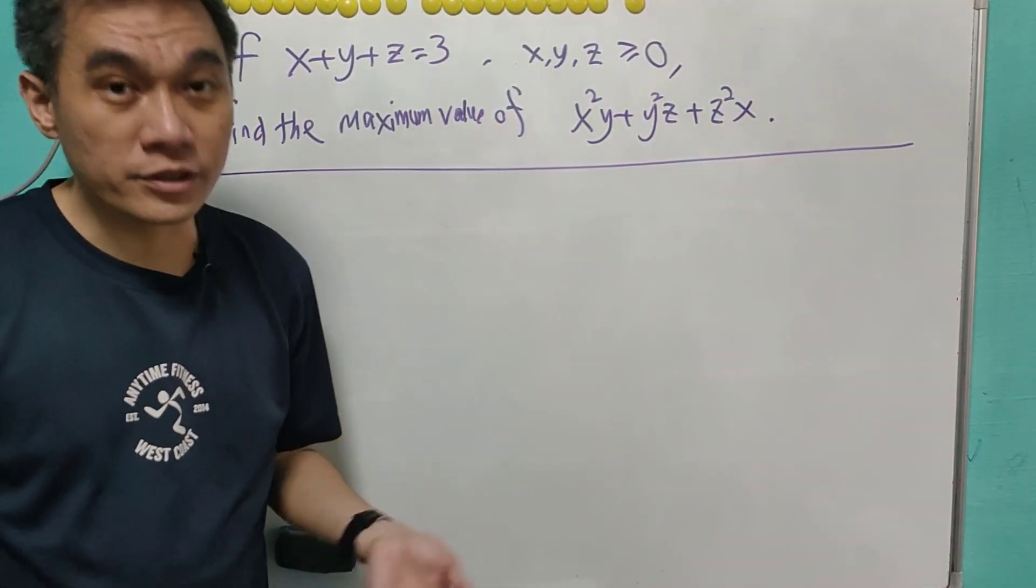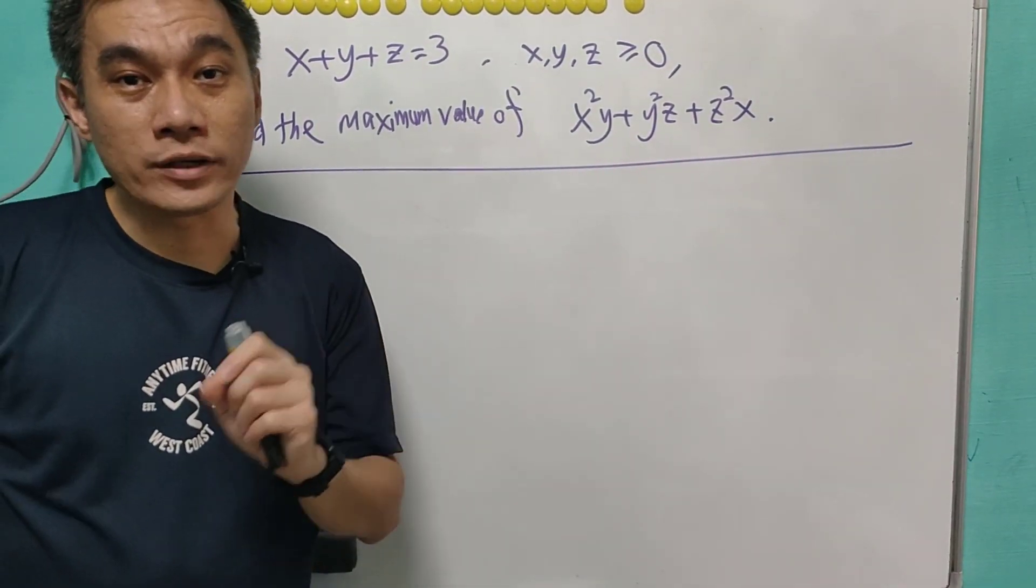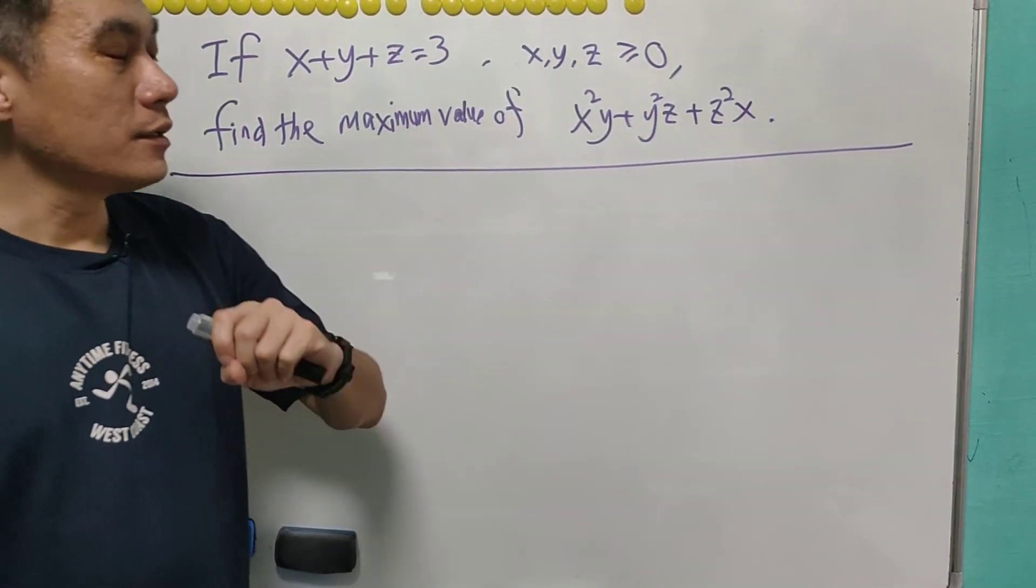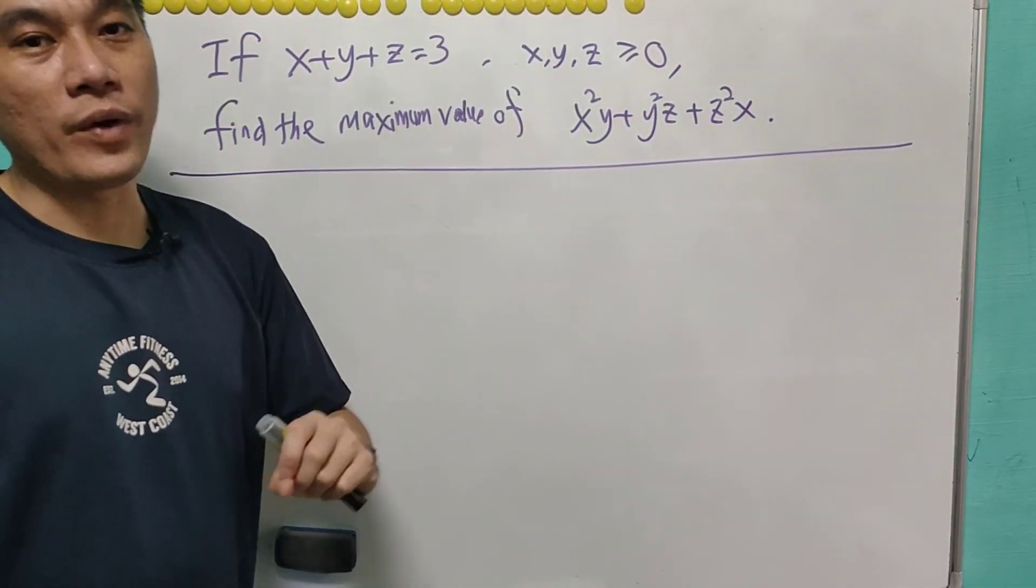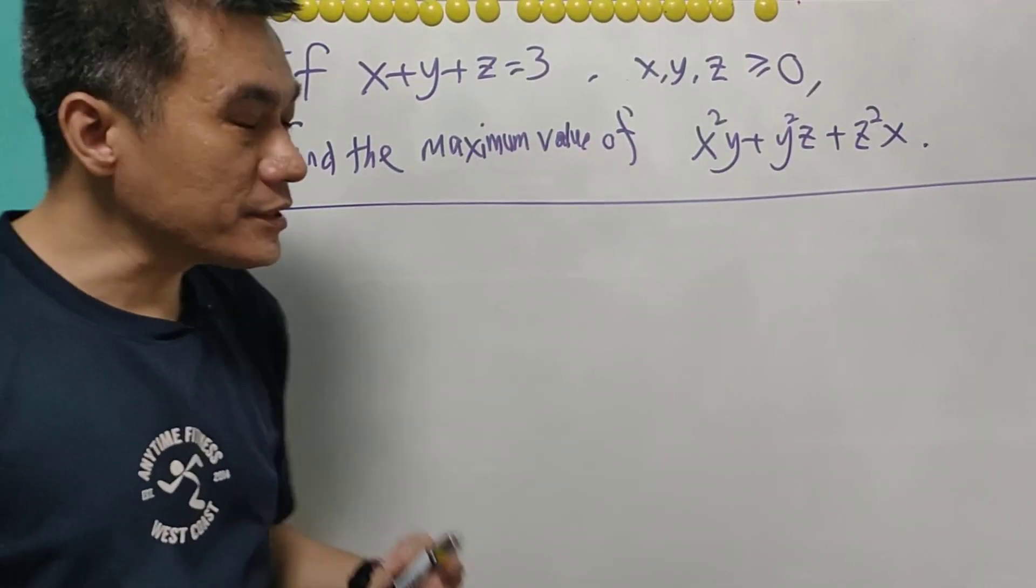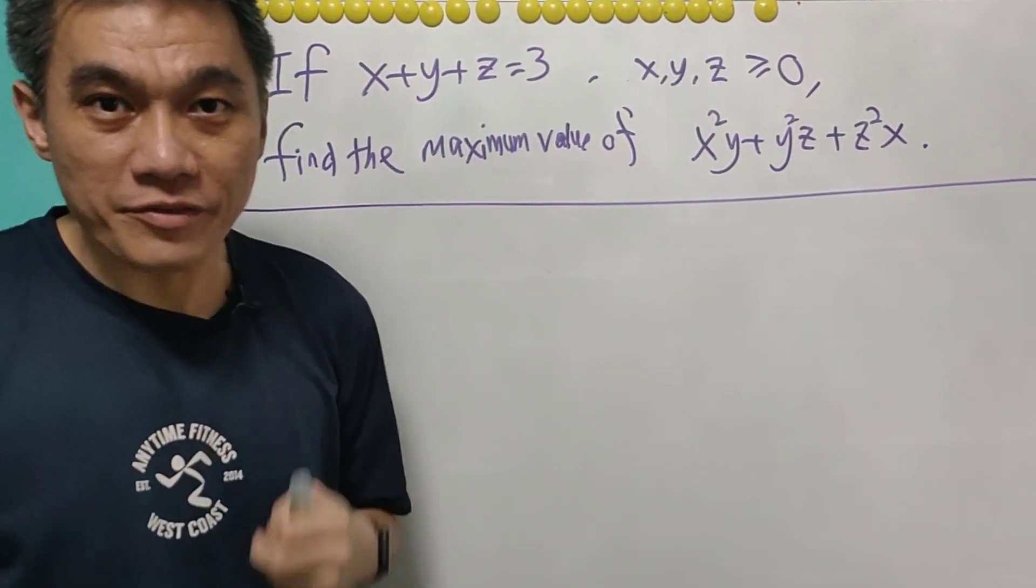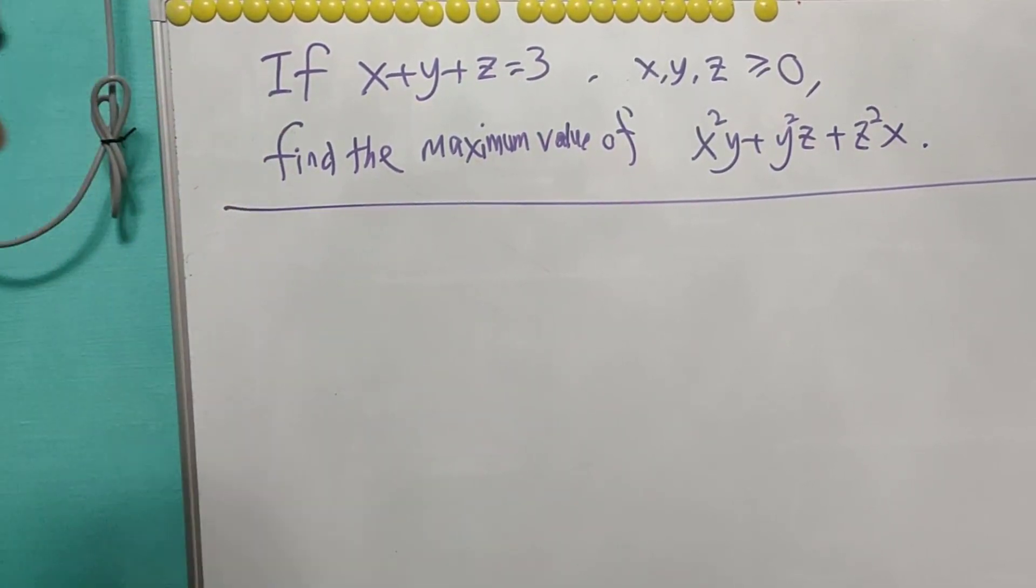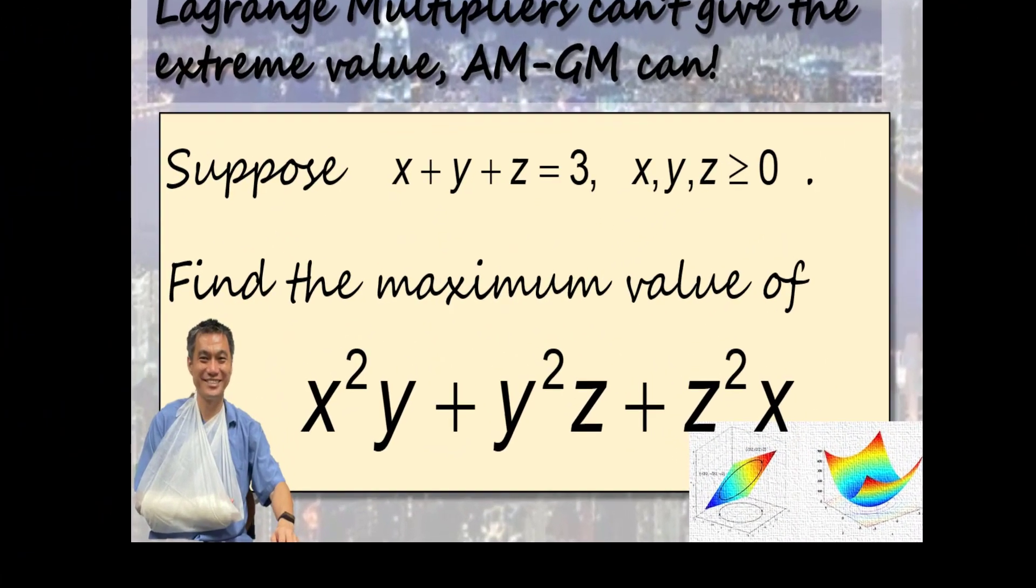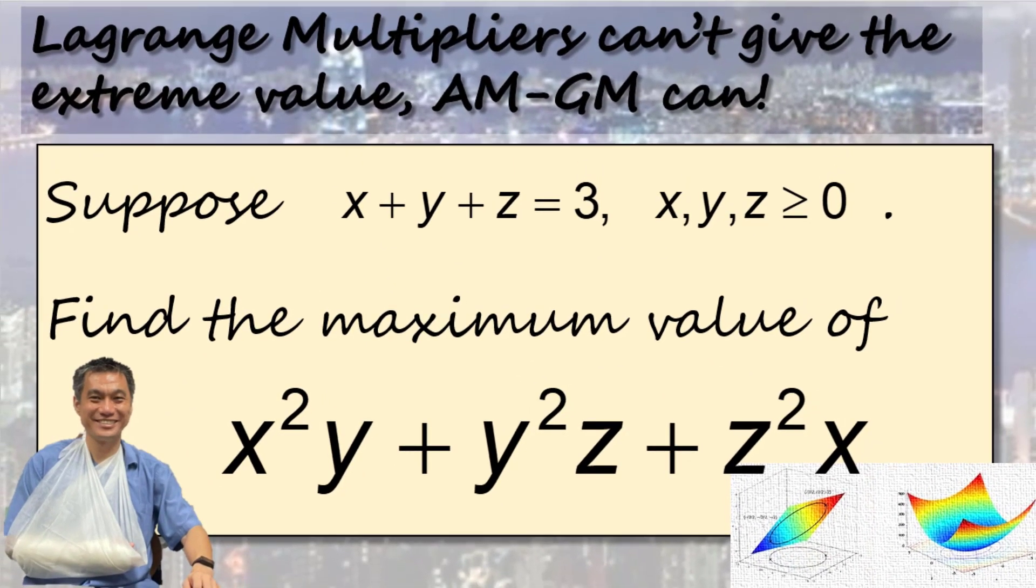We can use various techniques to show this. Some will use Lagrange multiplier. When you use Lagrange multiplier, you actually get the point x equals y equals z equals 1. However, Lagrange multiplier cannot tell you whether this is a maximum point or minimum point. And surprisingly, the maximum value for this expression is not equal to 3. Please have a good try before you look at the answer. Pause the video now if you wish to solve it. Keep watching the video once ready.